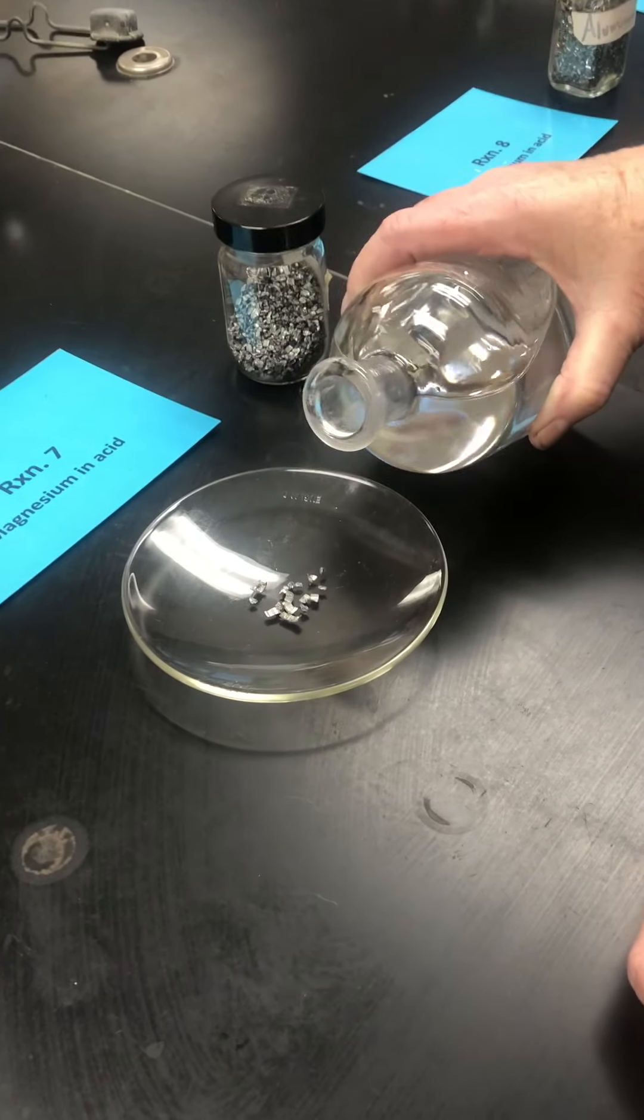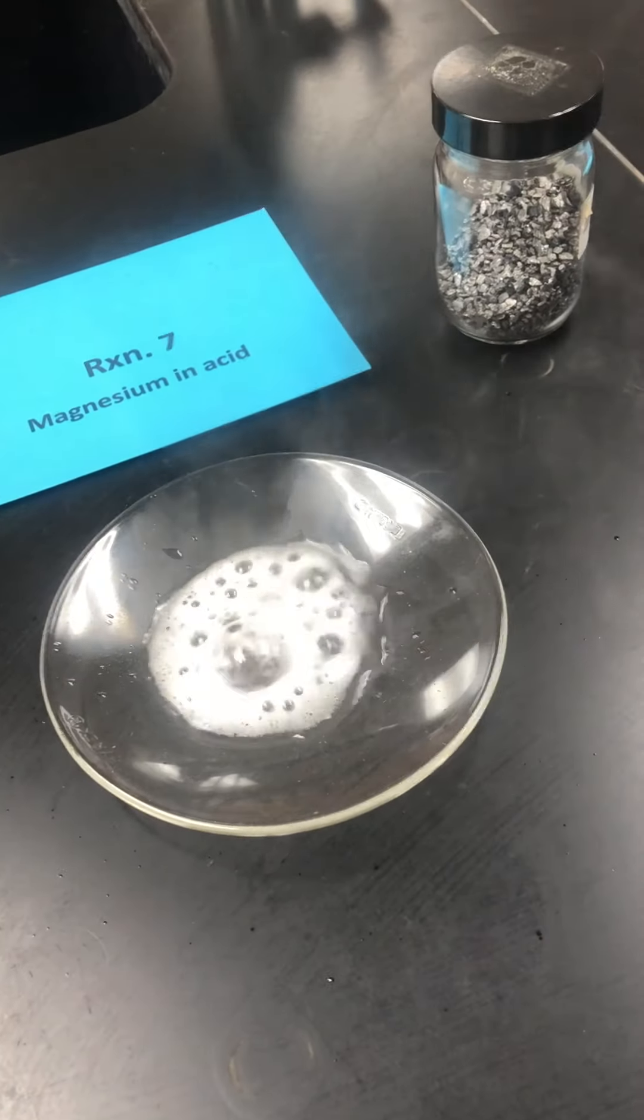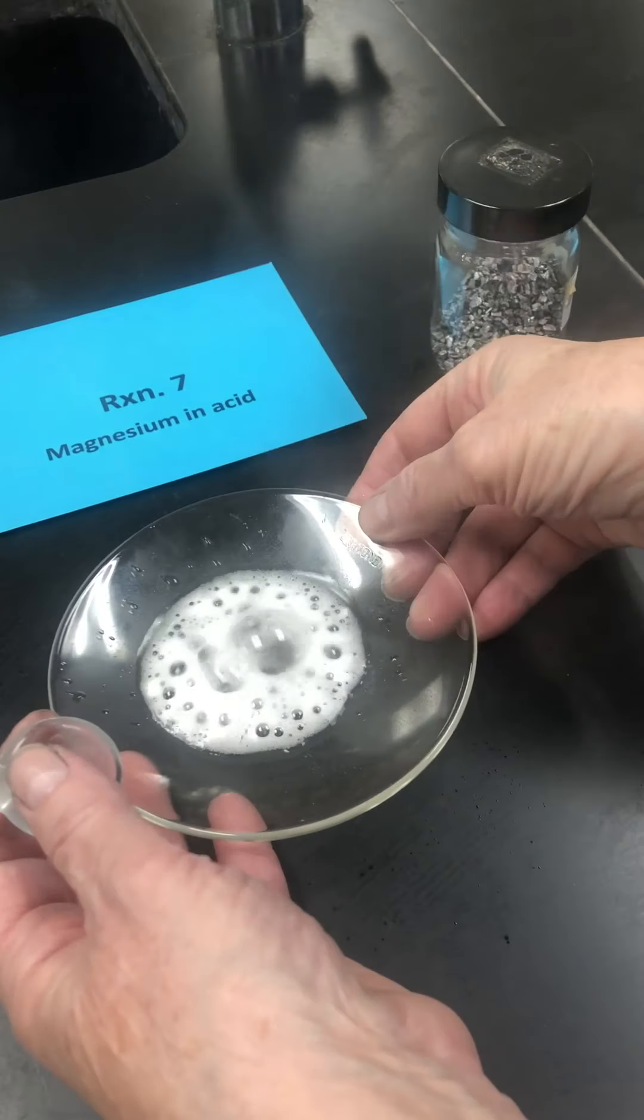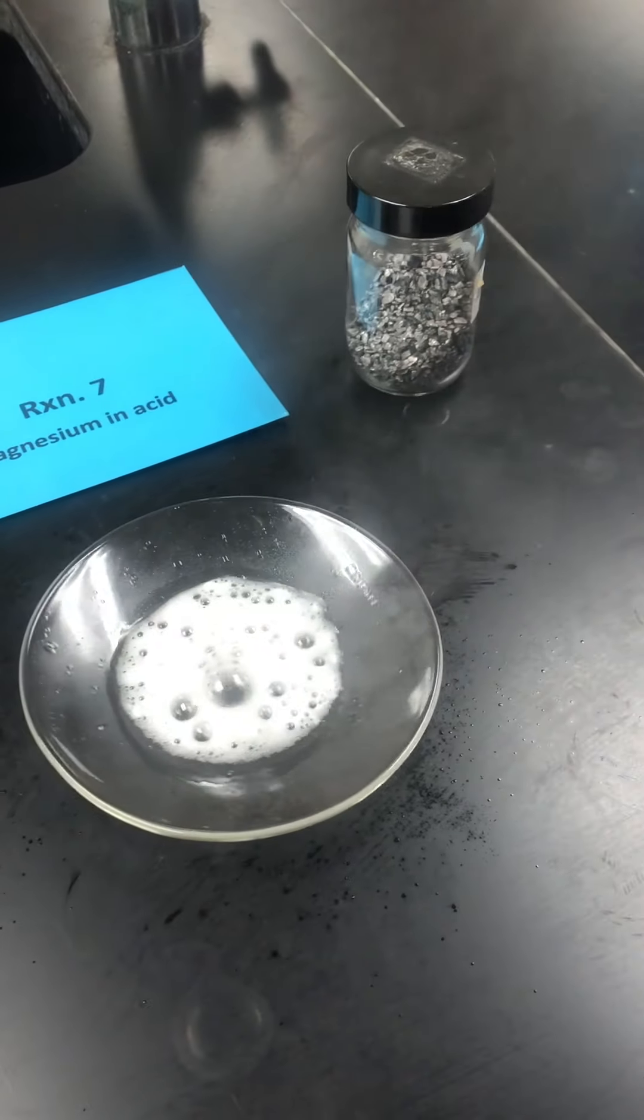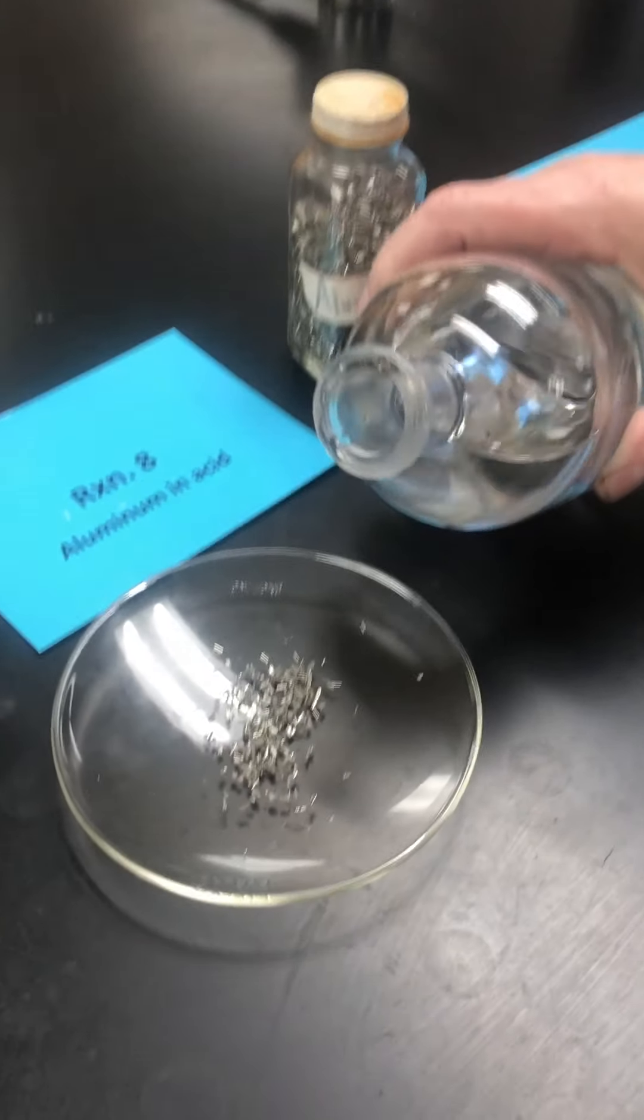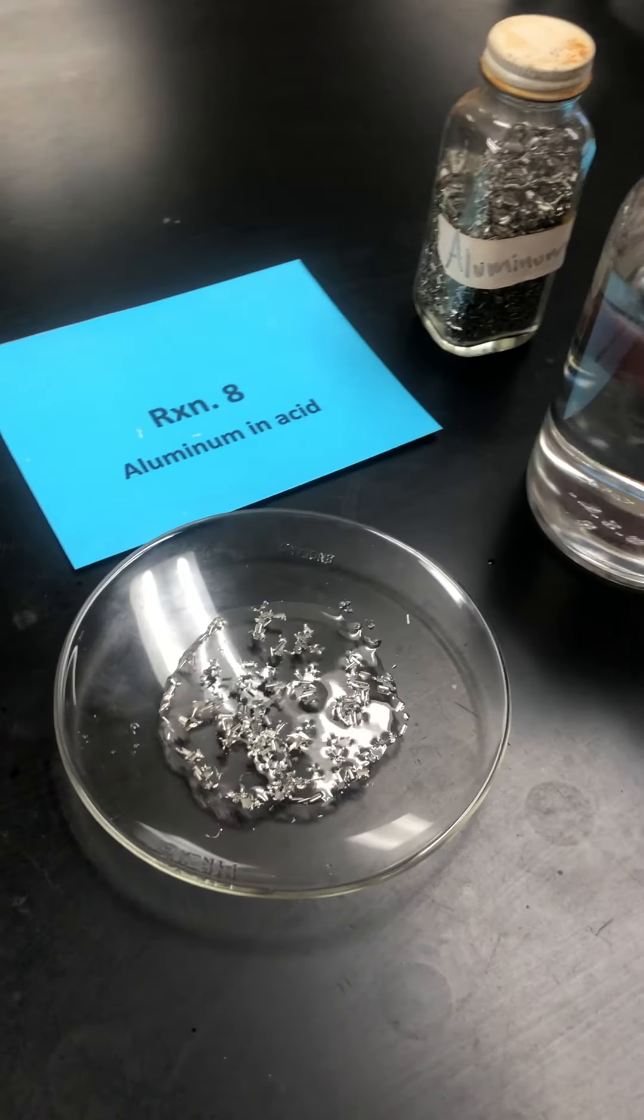Here is the hydrochloric acid added to the magnesium, and I might say this is very warm. Here is the hydrochloric acid added to the aluminum. Now I'm going to come back to this one in just a minute.